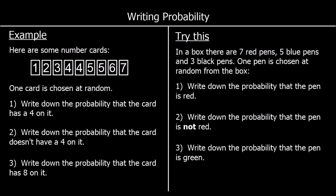Writing probability. Here are some number cards: 1, 2, 3, two 4s, two 5s, a 6 and a 7. One card is chosen at random. Write down the probability that the card has a 4 on it. How many 4s are there? There are two 4s. Out of how many in total? There are 9 in total. So the probability is 2 ninths.